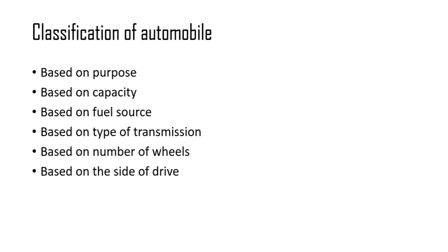Let us start from the classification of automobile. Automobile can be classified into several types based on several criteria: on the basis of purpose, capacity, fuel source, types of transmission, number of wheels, or based on the side of drive. Let us start one by one.